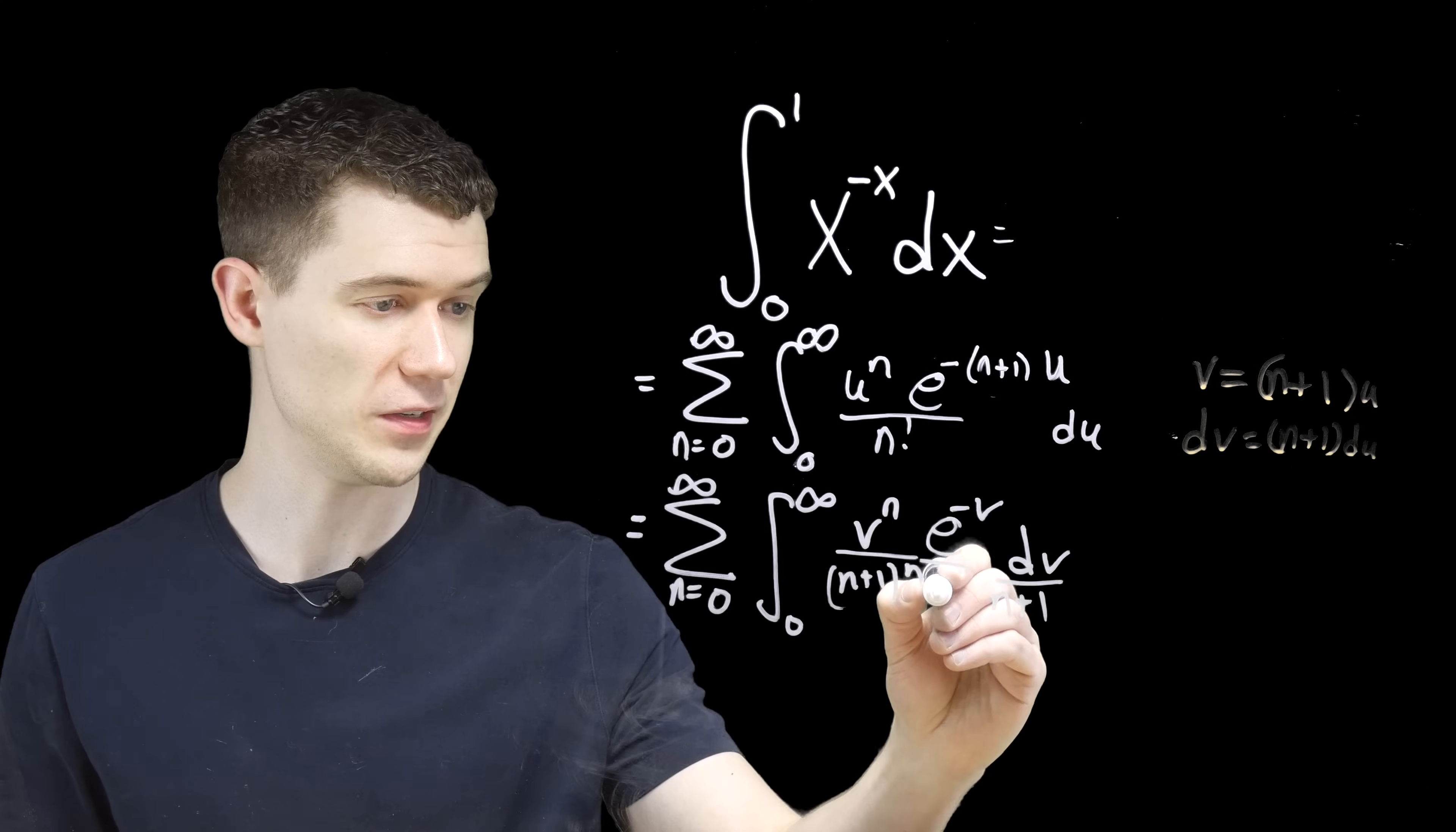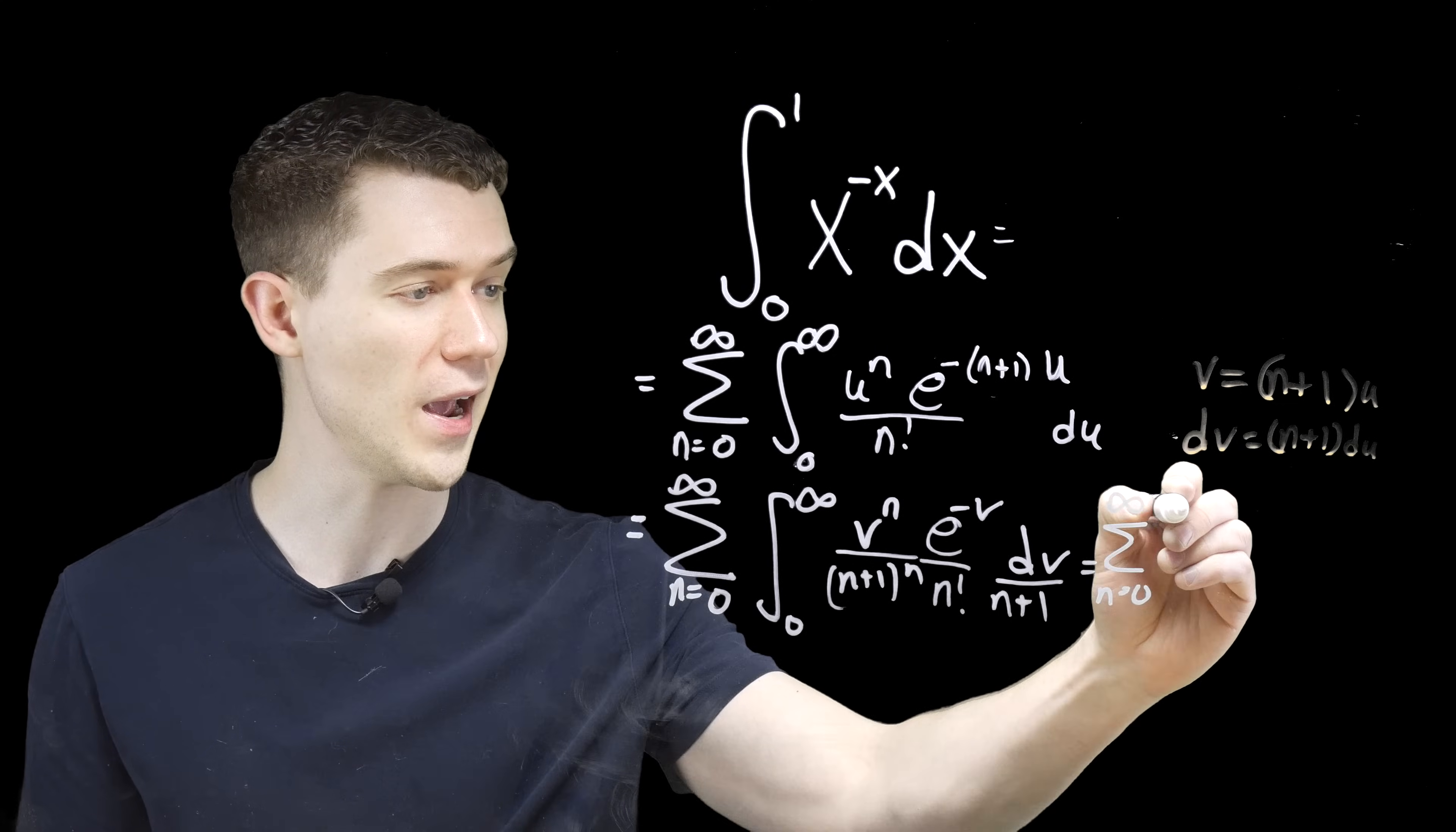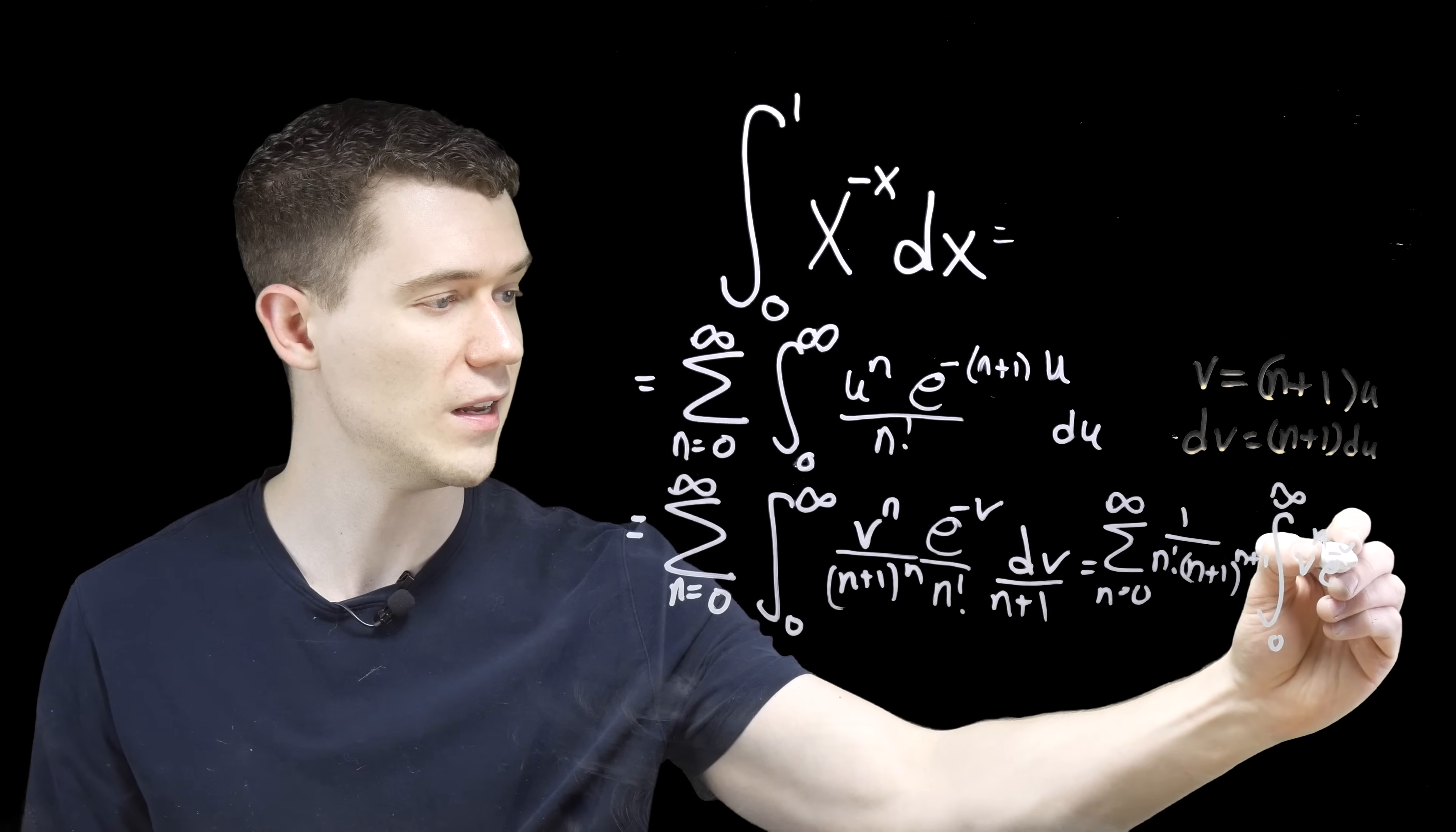We're getting very close. Still need, there's an n factorial underneath here. And actually, all of these n's here, n plus 1 to the n, n factorial and n plus 1, none of those have a v in them. So they're all constants, we can factor them out of the integral. Let's just pull that out. We have this sum here, 0 to infinity still. And on the outside, what we have is 1 over n factorial. And then I'll just combine these n plus 1s. We'll have an n plus 1. It was already to the power n. Bump it up by 1, this will be to the n plus 1, times this integral from 0 to infinity of v to the n e to the minus v dv.